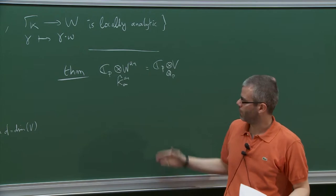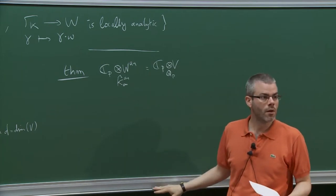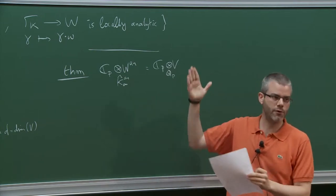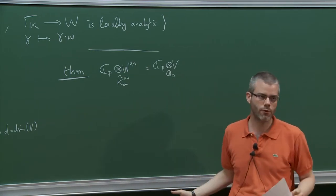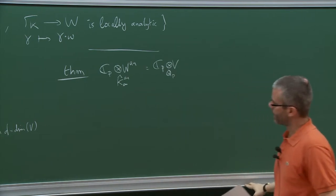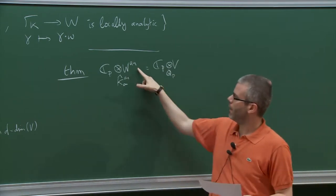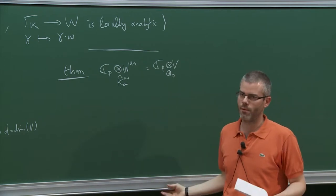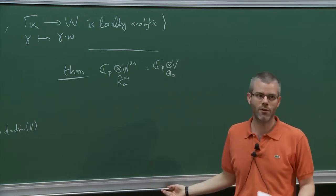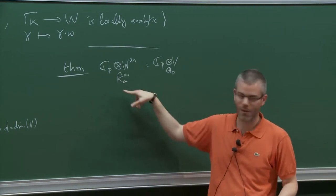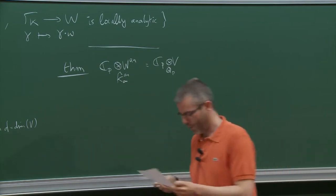This is true regardless of whatever Lubin-Tate group you choose. So you have W^an, which is a (K_∞-hat)^an-vector space of the right dimension. Of course, when you see this, the first question you ask is: what does this field K_∞-hat^an look like?